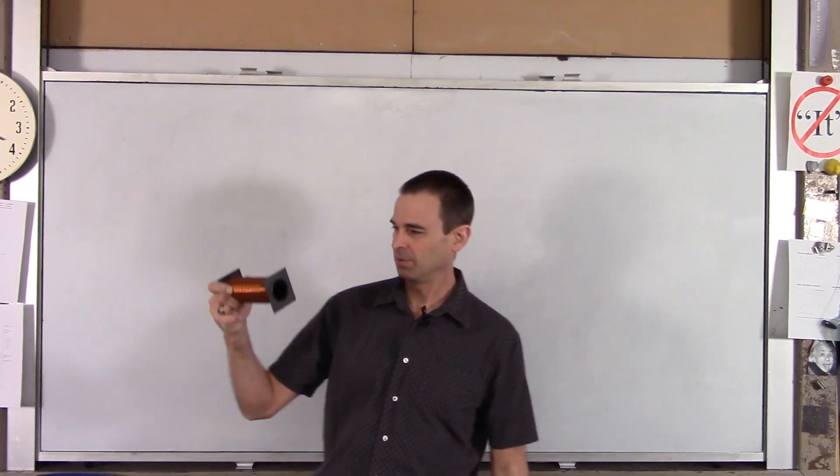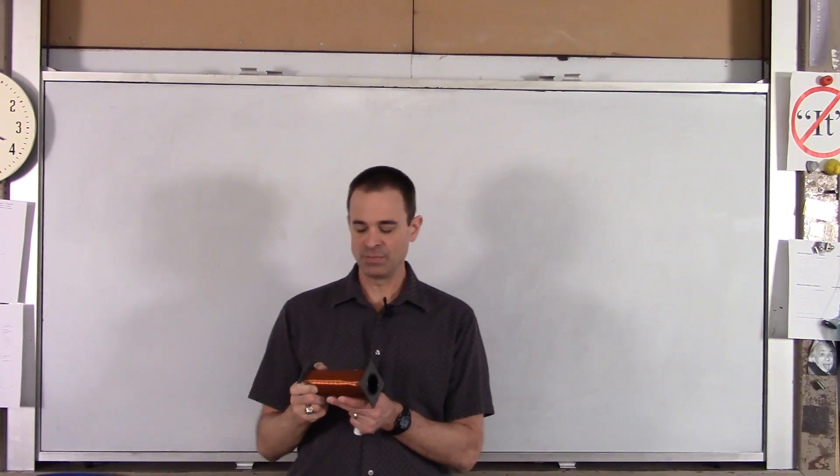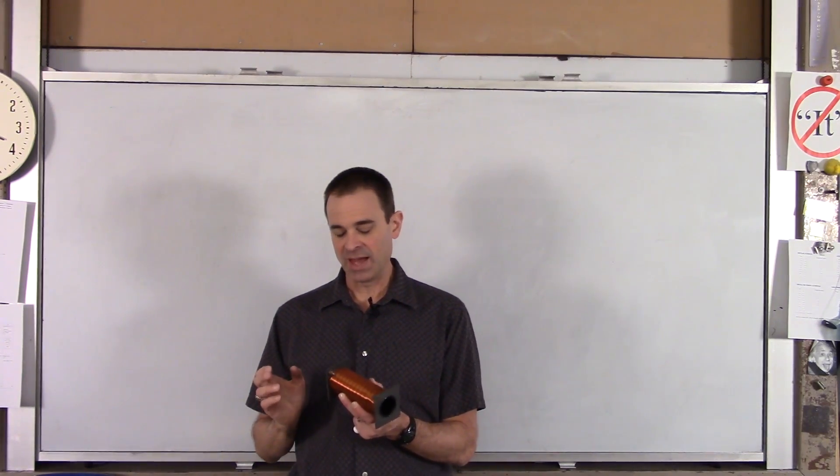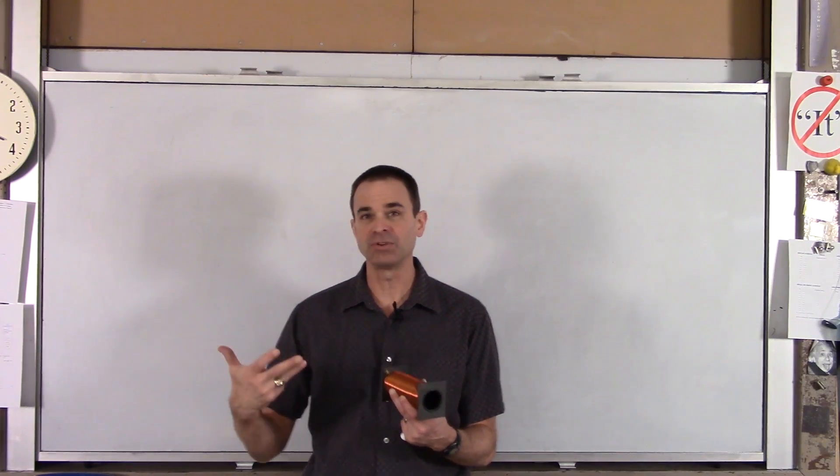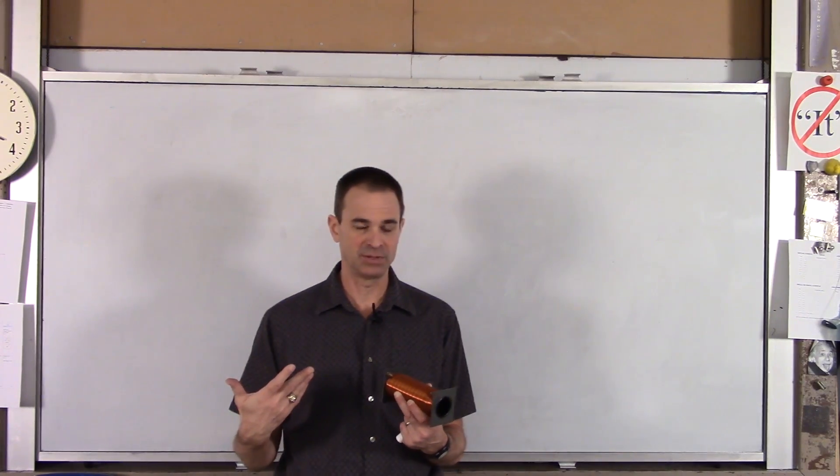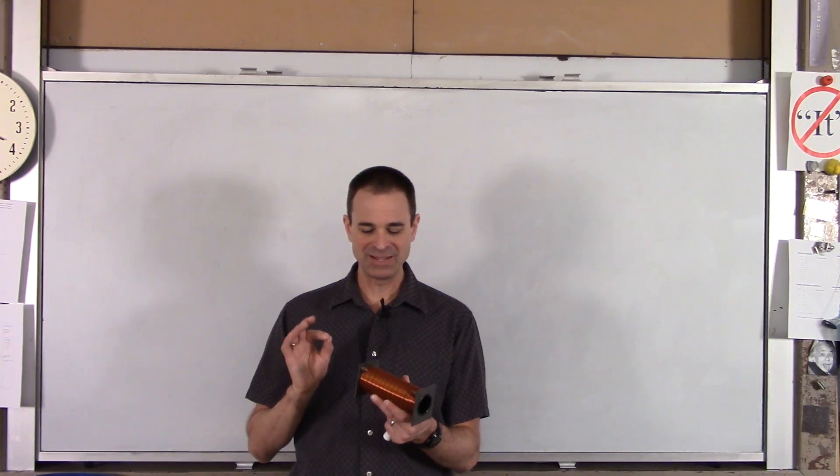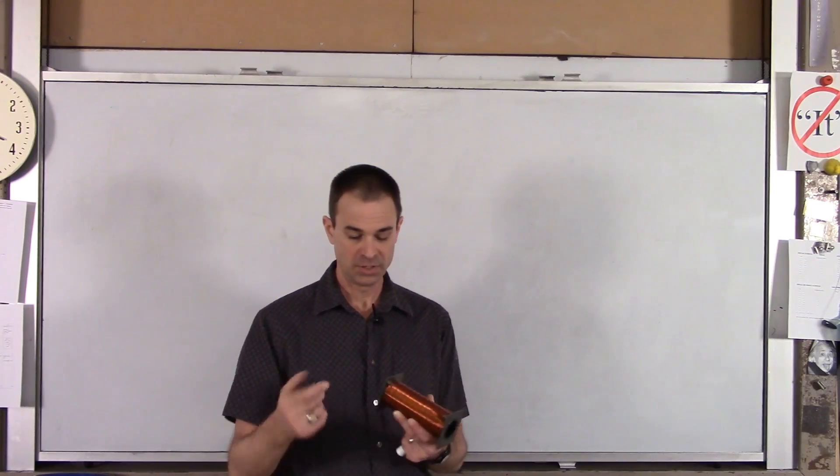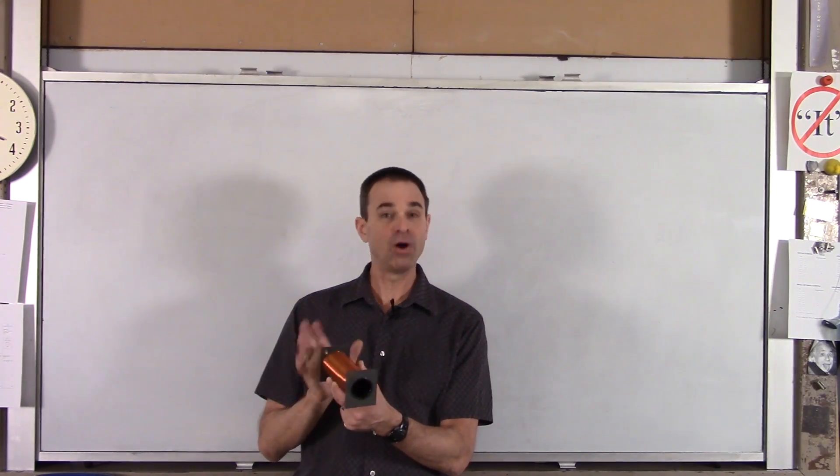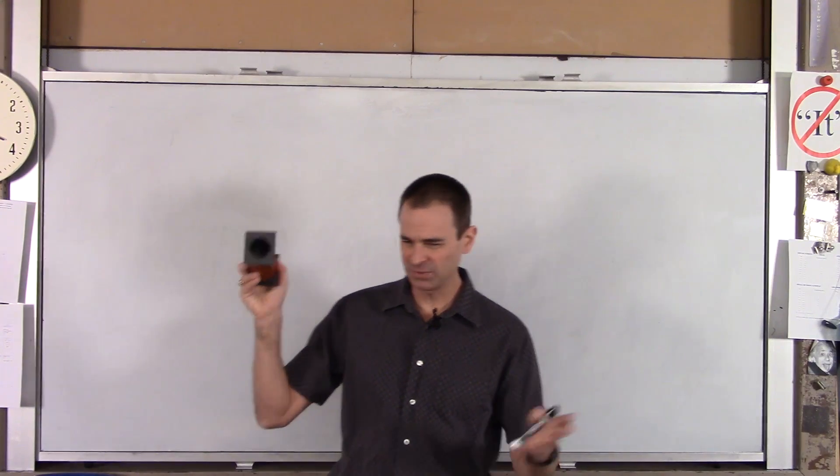So imagine we have a solenoid, a coil of wire, and in that solenoid there's a magnetic field. Within that magnetic field there is energy. The magnetic field contains energy. What we're going to do is figure out the energy density, the joules per meter cubed stored in that volume of the solenoid. So what is that energy density?